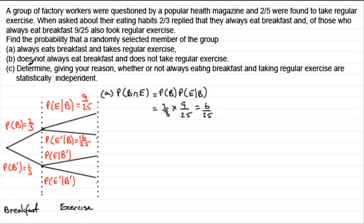For part B, the probability that someone does not always eat breakfast and does not take regular exercise will involve not taking breakfast and not taking regular exercise — that's a probability of one third times whatever this lower branch probability is. We're a bit stuck because we don't know that probability yet, so to get around this we go back to the fact that the probability of someone taking regular exercise was given as two fifths.